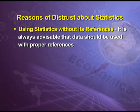Using statistics without proper reference is also a reason for distrust. It is always advisable that data should be used with proper references. If related references are ignored while using the data, naturally the result will not be trustworthy or acceptable, and it will develop a sense of distrust. Considering the importance of references for statistical use, it is stated that statistics should not be used as a blind man who uses a lamp post for support instead of illumination.